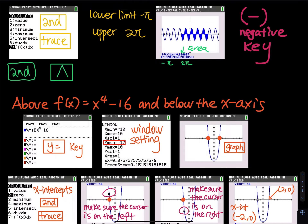Go to the window setting and hit the window key. X min and max from negative 10 to 10. For Y, go down to negative 17 so you can see the vertex of the parabola, and max is 10, scale is 1. Then hit the graph. Do you see that this piece is below the x-axis?